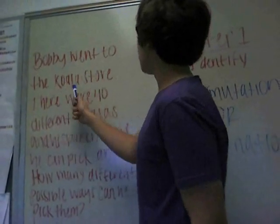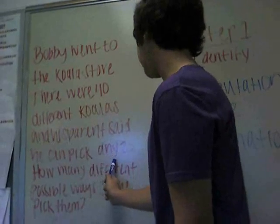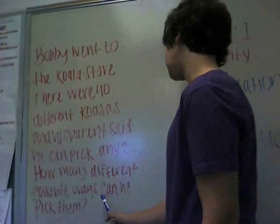So let's say Bobby went to the koala store and there were 40 different koalas and his parents said he can pick any two. So how many different possible ways can he pick them?